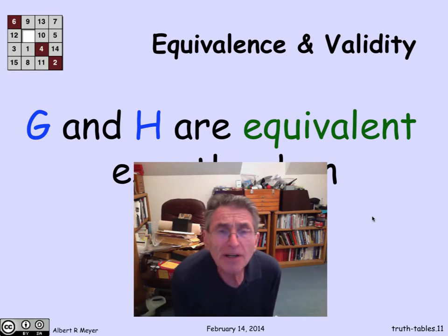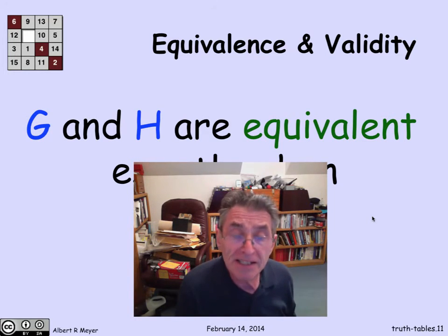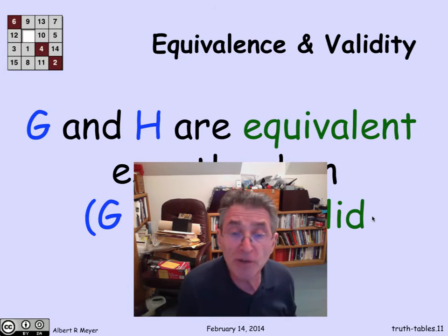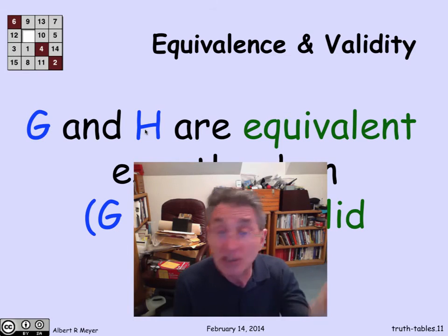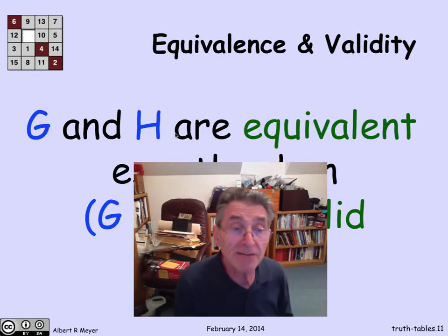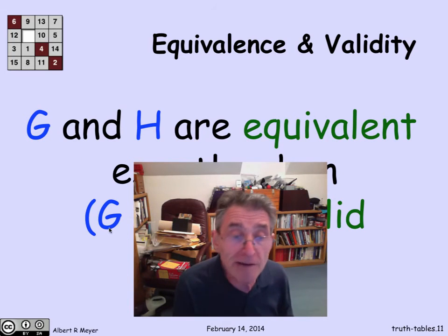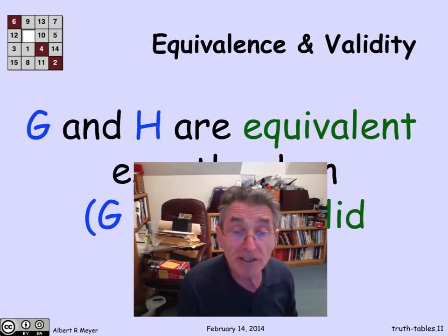We can now connect validity and equivalence: two formulas g and h are equivalent if and only if g ↔ h is valid. The formula g ↔ h is true when g and h have the same truth value, and g and h being equivalent means they always have the same truth value in every environment — which is the same as saying g ↔ h is always true, i.e., valid. The converse argument works the same way.